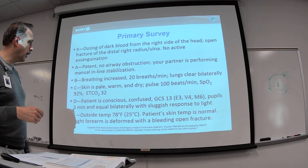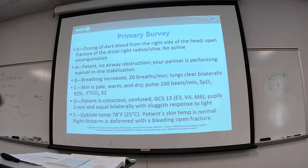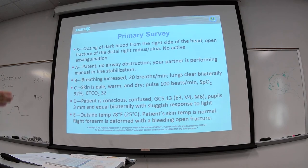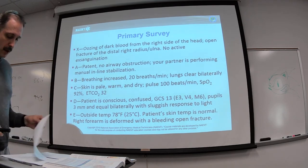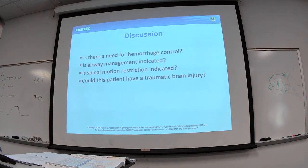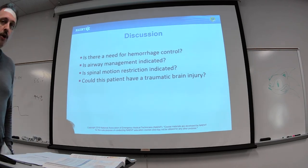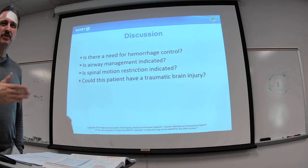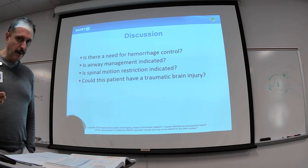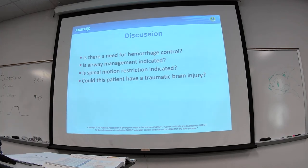Outside temperature is about 78 degrees — not an issue. Skin temperature appears normal. His right forearm is deformed with an open bleeding fracture showing venous bleeding. Is there any need for hemorrhage control? It's not an arterial bleed, so a tourniquet is not indicated at this time. It is an open fracture with a small venous bleed, so direct pressure is the management. Now let's look at the airway more carefully.